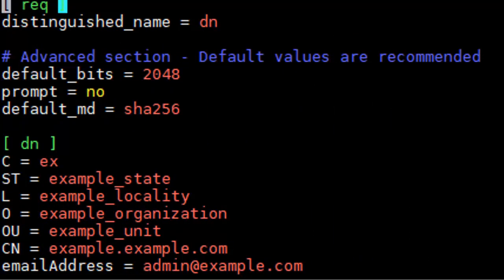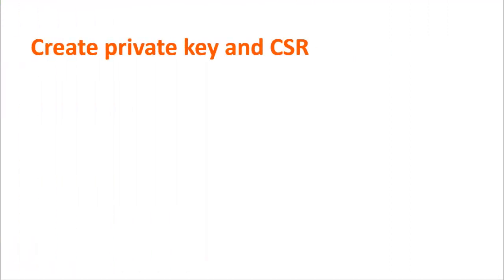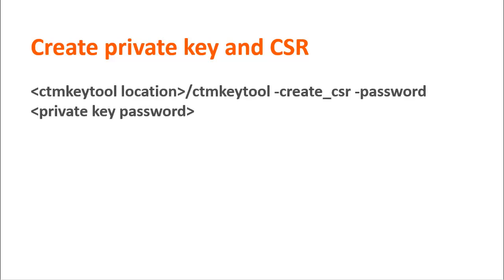First, you need to edit the parameters in the CSR Params. In the DN section, change the value of these parameters to the required values. The CN parameter must be the FQDN of the Control-M EM server. Next, you need to create the private key and certificate signing request file by running the CTM key tool utility. Use the certificate signing request file to obtain the certificate and possibly the certificate chain file from an external recognized CA. All certificates must be valid X509 certificates.